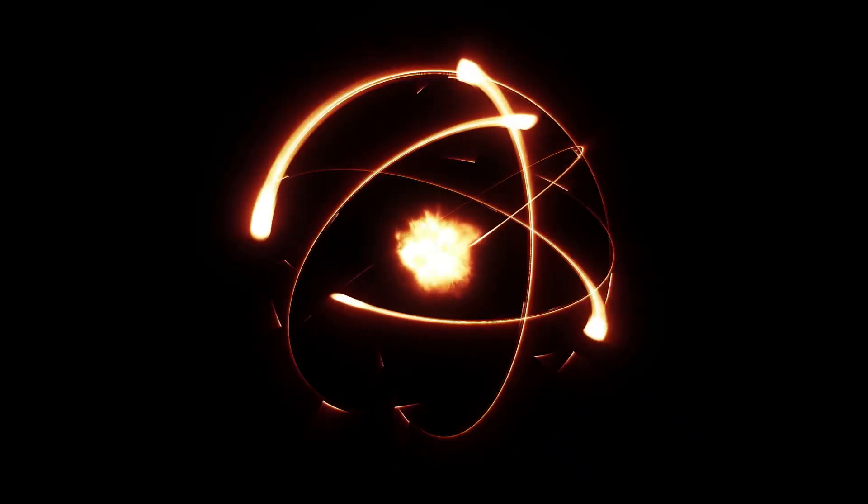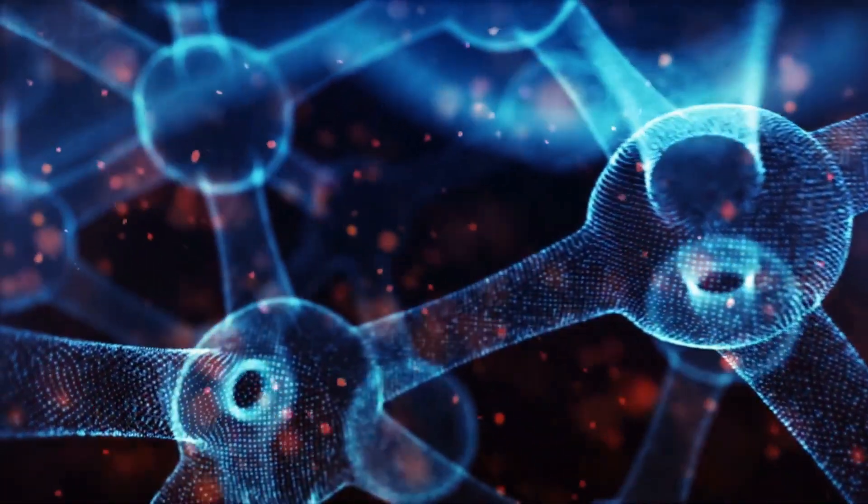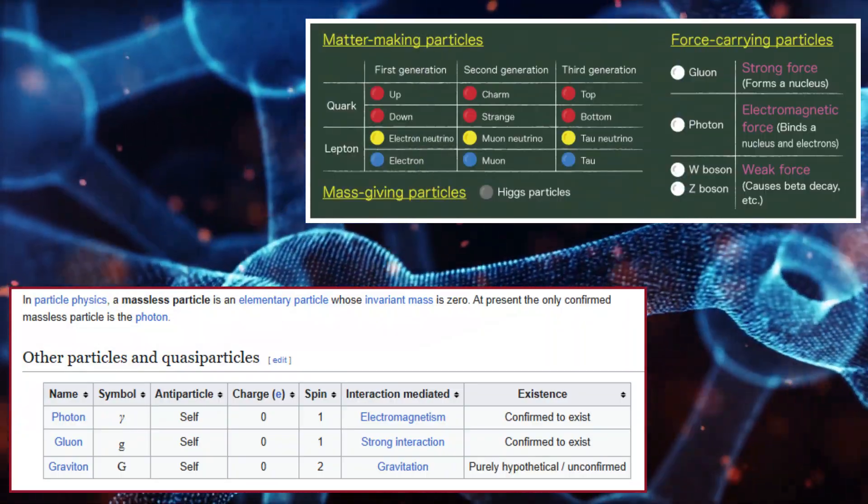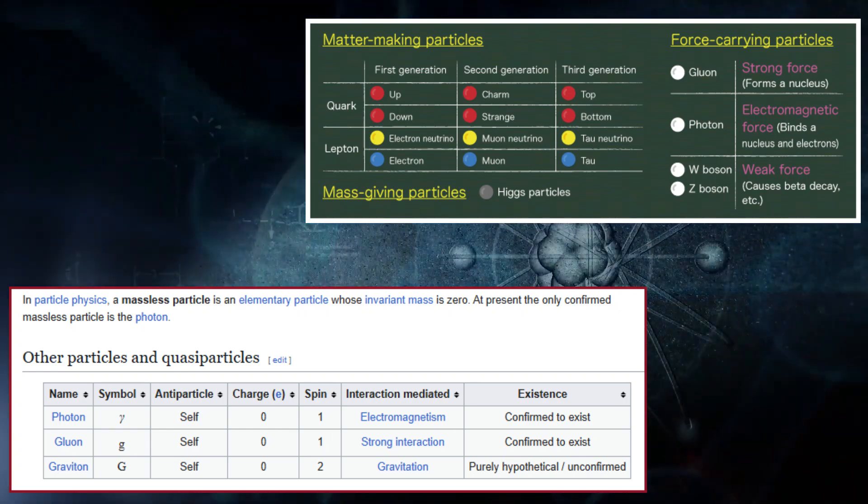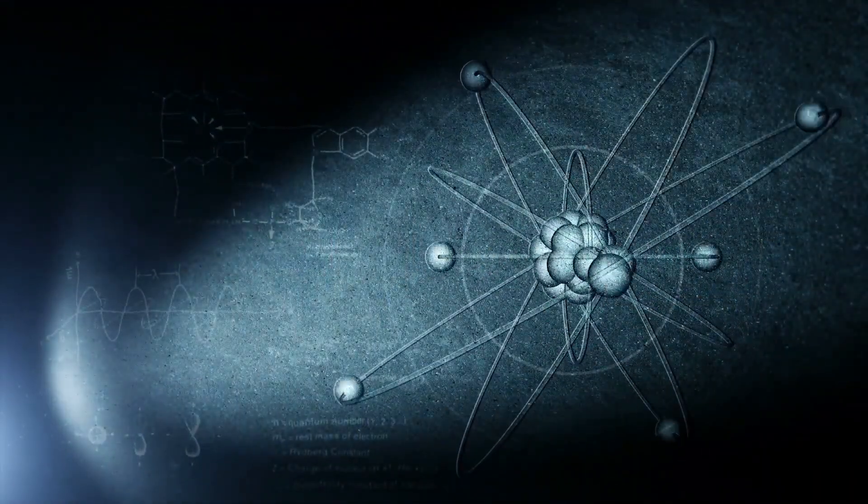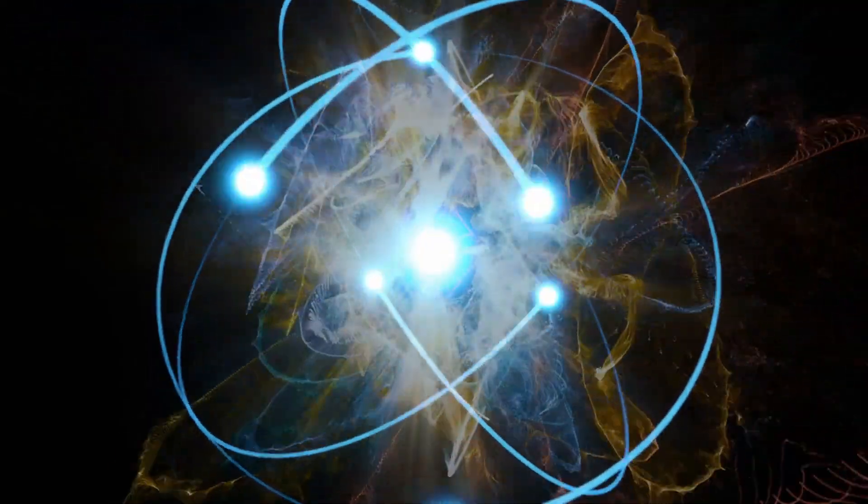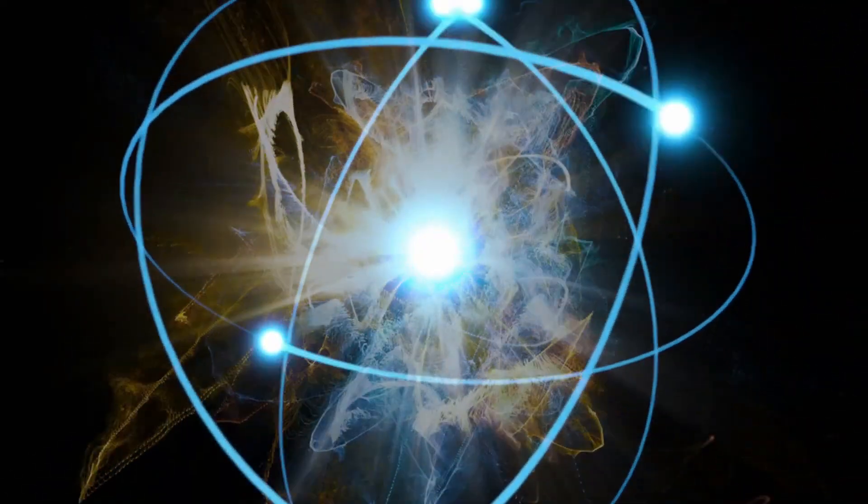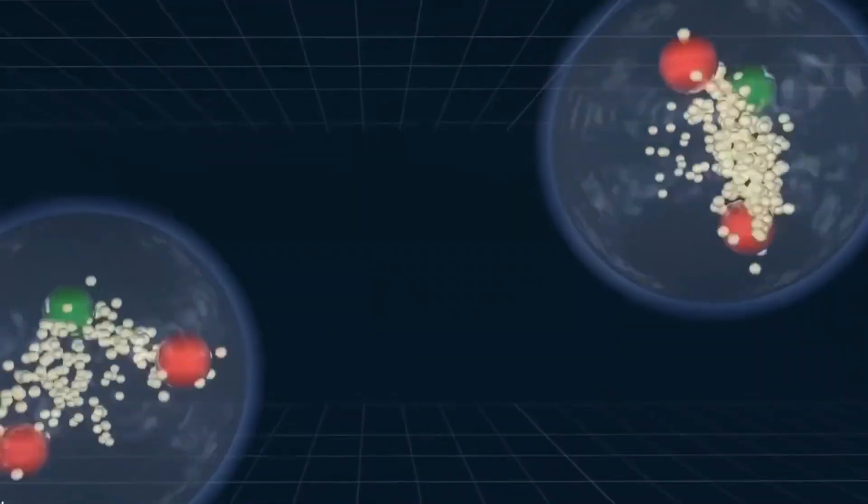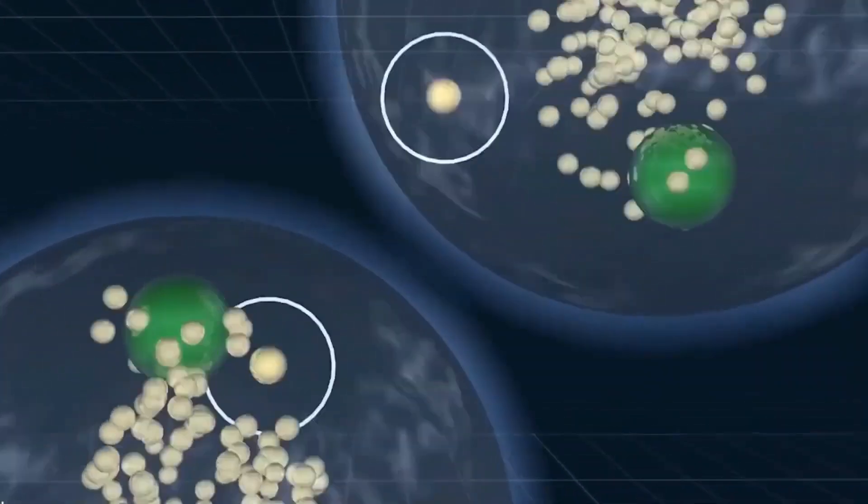Neutrinos are among the most enigmatic particles known to science. They are almost massless, rarely interact with matter, and are so pervasive that they constantly stream through everything around us. Despite their abundance, neutrinos have remained shrouded in mystery because their feeble interactions make them extraordinarily difficult to study.